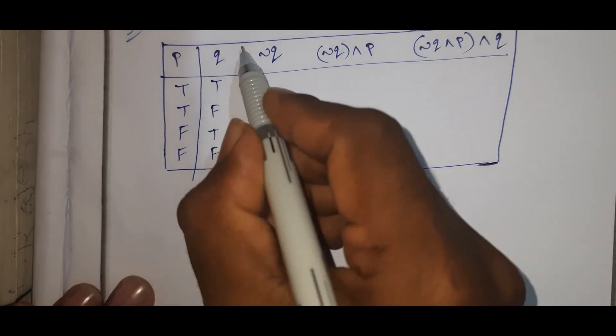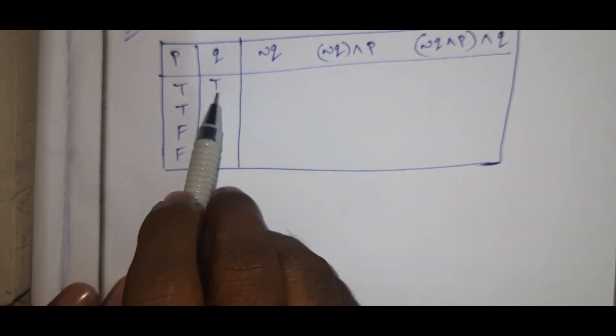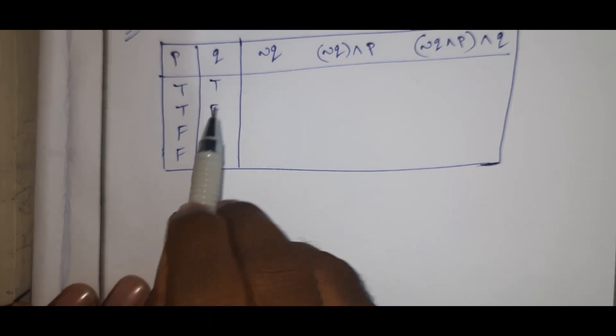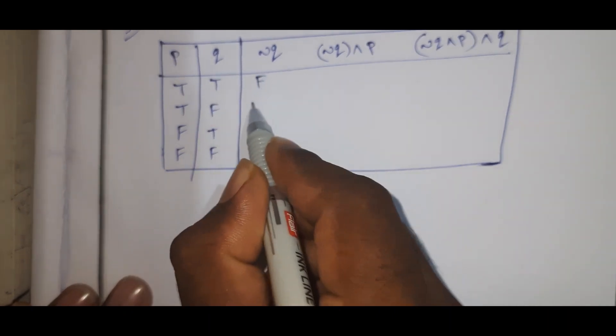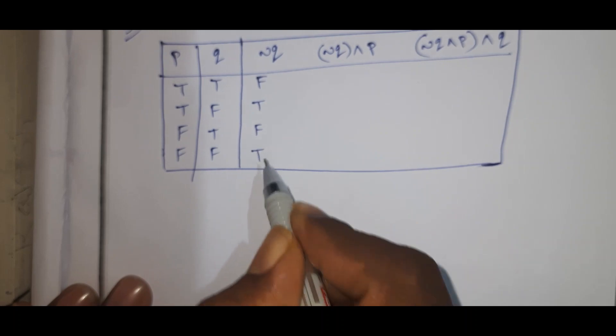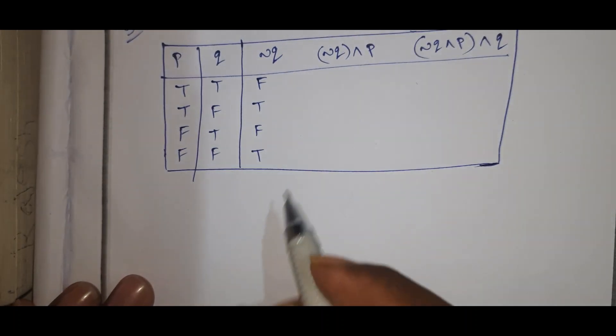The negation Q column values are: false, true, false, true.